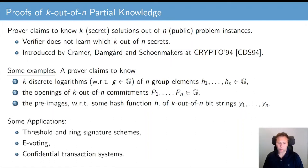Proofs of partial knowledge have found numerous applications, in particular the case k equals 1, so 1 out of n proofs of partial knowledge. Some examples are threshold and ring signature schemes, e-voting protocols, and confidential transaction systems.